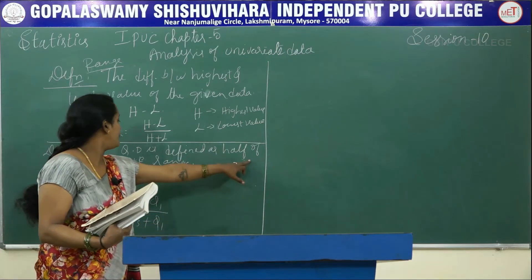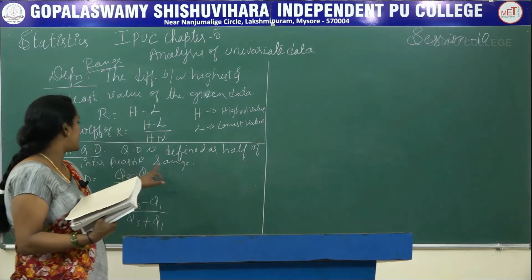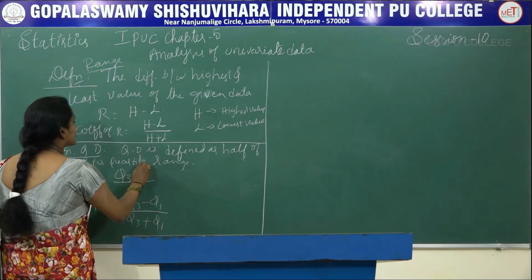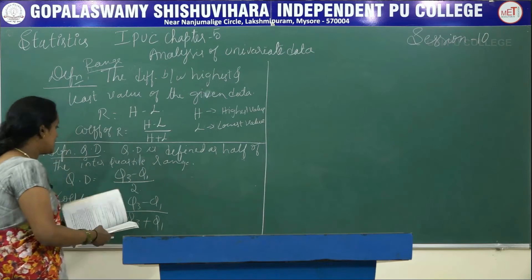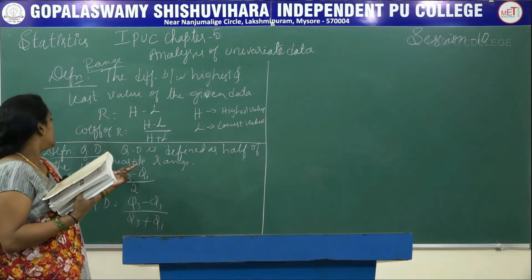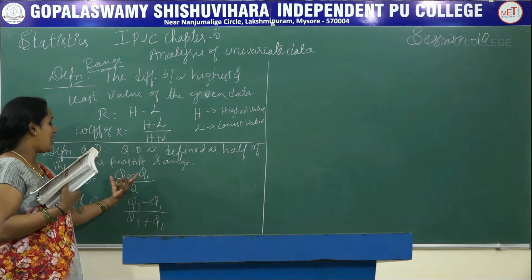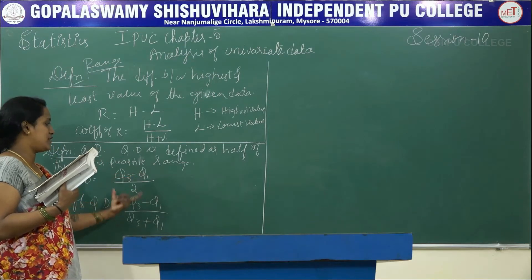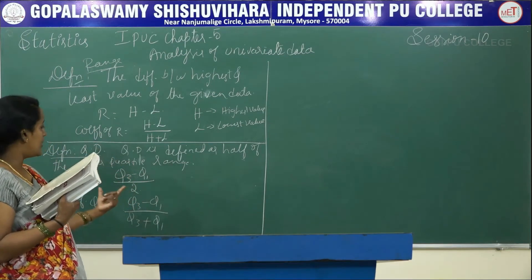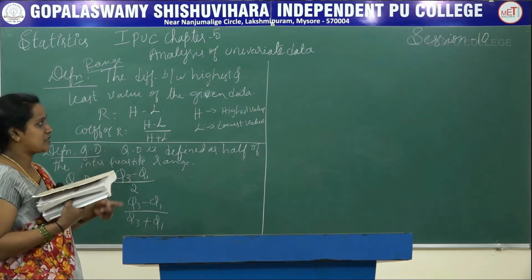To clarify, the interquartile range uses Q1 and Q3, which are the first and third quartiles. Half of that interquartile range, Q3 minus Q1, divided by 2 gives us the quartile deviation.